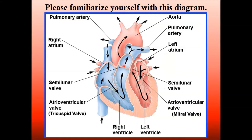From the right ventricle, blood is pumped through the pulmonary semilunar valve into the pulmonary artery, which splits to go left and right to both lungs. In the lungs, we pick up oxygen and drop off CO2. We then return to the left side of the heart through the pulmonary veins, dumping into the left atrium. The left atrium has the bicuspid valve — also called the mitral valve — at the bottom, which is the atrioventricular valve leading into the left ventricle.